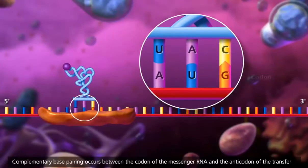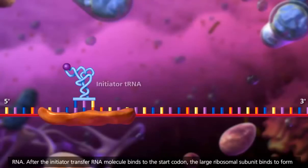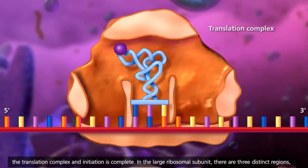Complementary base pairing occurs between the codon of the messenger RNA and the anticodon of the transfer RNA. After the initiator transfer RNA molecule binds to the start codon, the large ribosomal subunit binds to form the translation complex and initiation is complete.